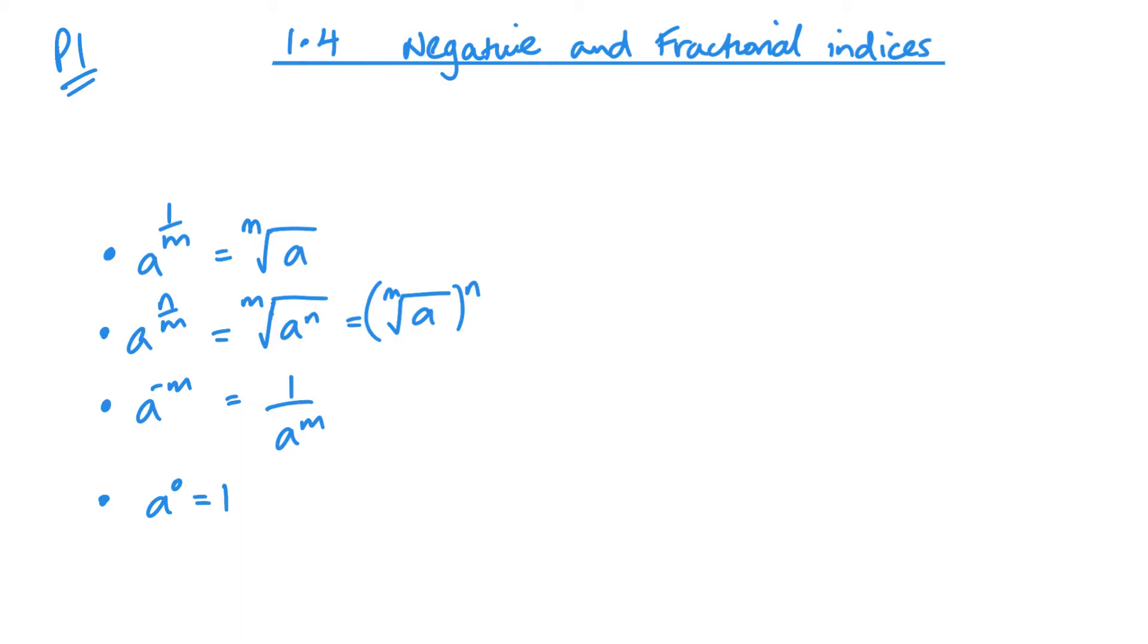Welcome back to P1. Today we're going to be looking at unit 1.4, negative and fractional indices. I've put the rules that we're going to be looking at today, the four rules down the side. They're quite self-explanatory. Let's get into a couple of examples.